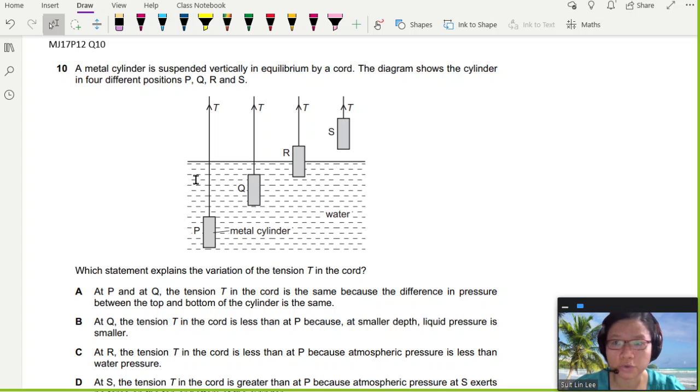So this is a buoyancy question. In this question, we have a metal cylinder suspended vertically in equilibrium, so the resultant force is zero, by a cord. The diagram shows the cylinder in four different positions, P, Q, R, and S. Which statement explains the variation of tension T?